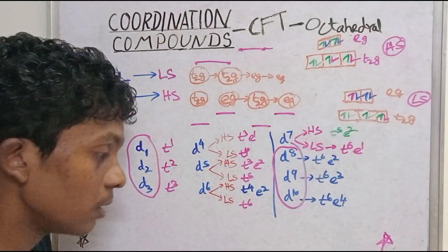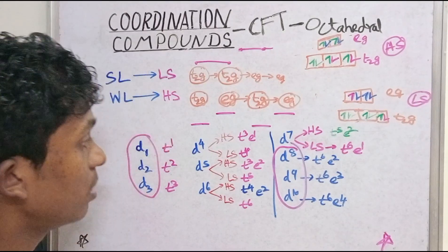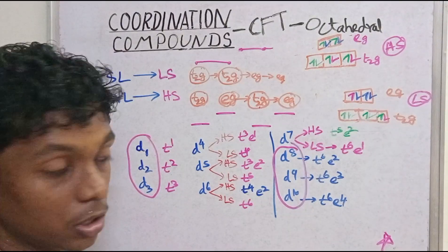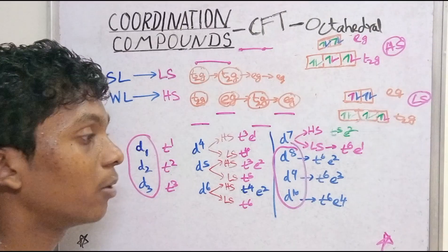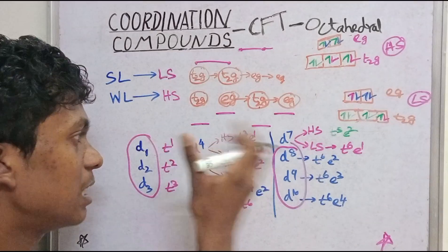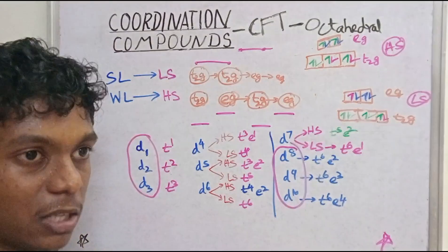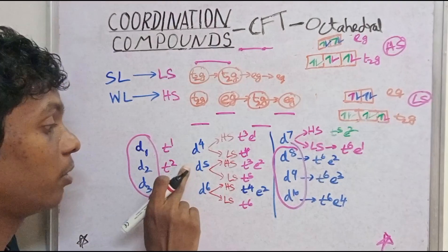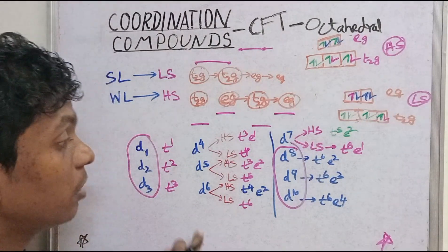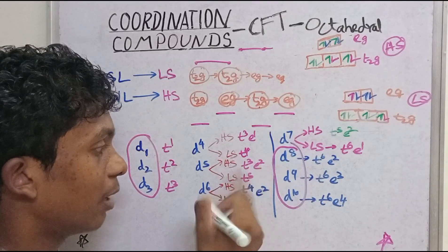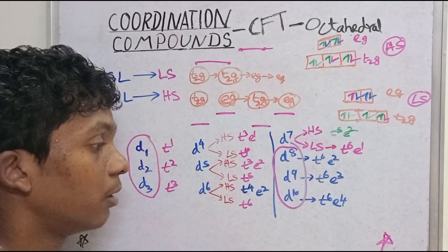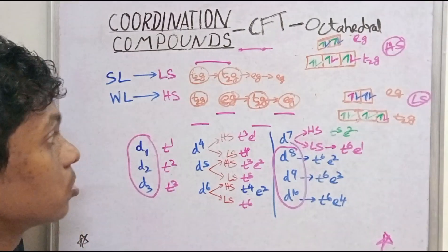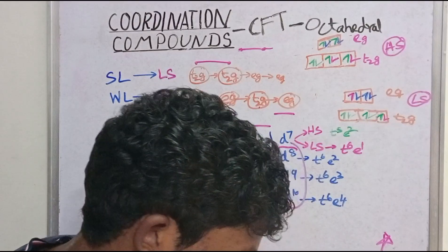So this is the concept. Now there is pairing energy. Pairing energy is important — it is actually very easy. When an entire electron pair forms, that releases or costs a pairing energy (PE). That is the pairing energy. For D5, in low spin there are 2 pairs, so pairing energy is 2PE.